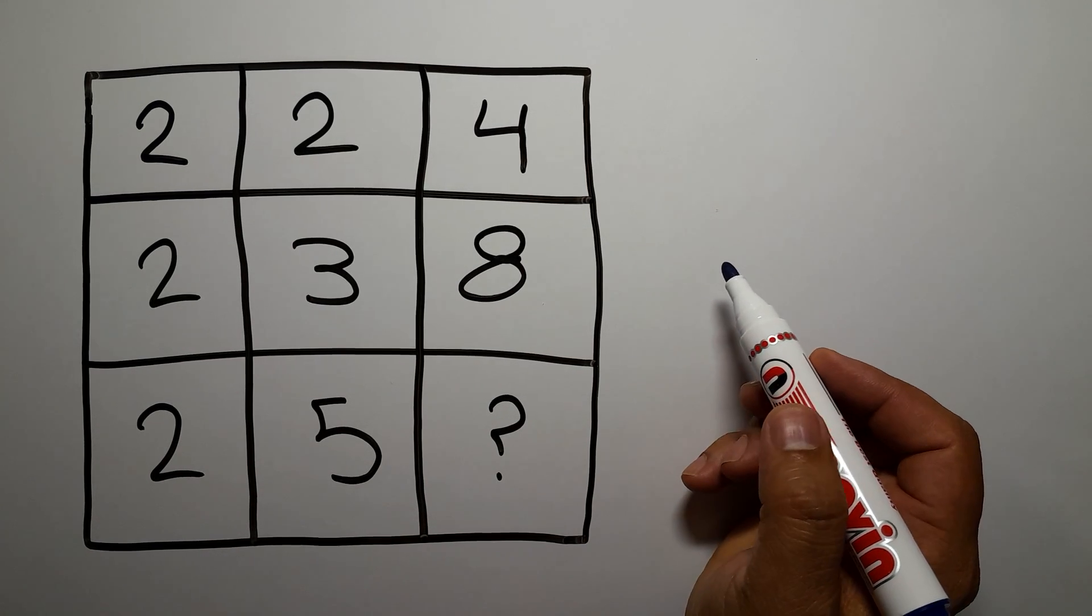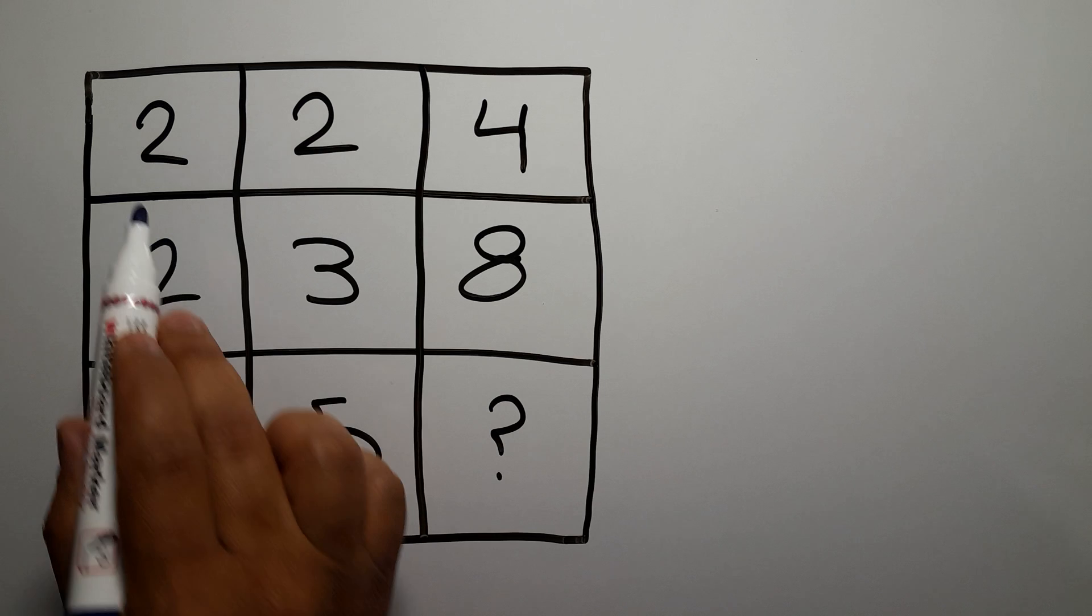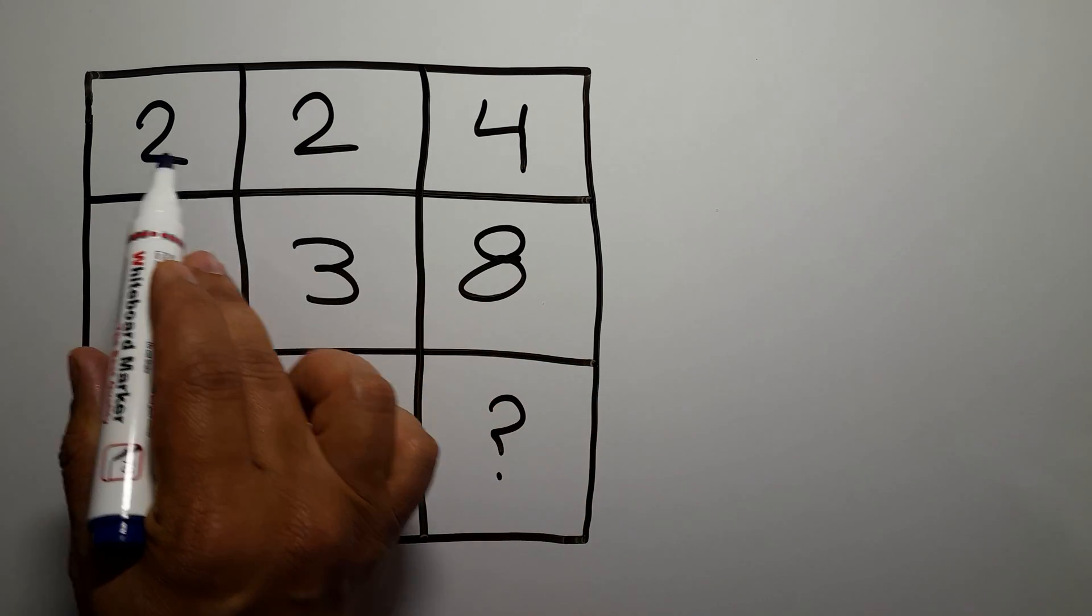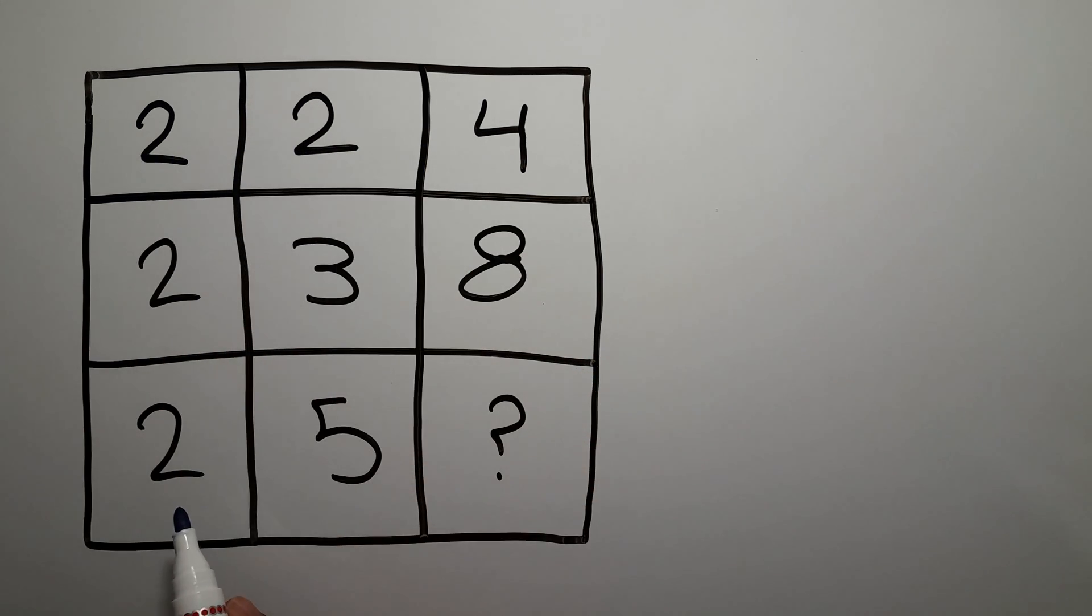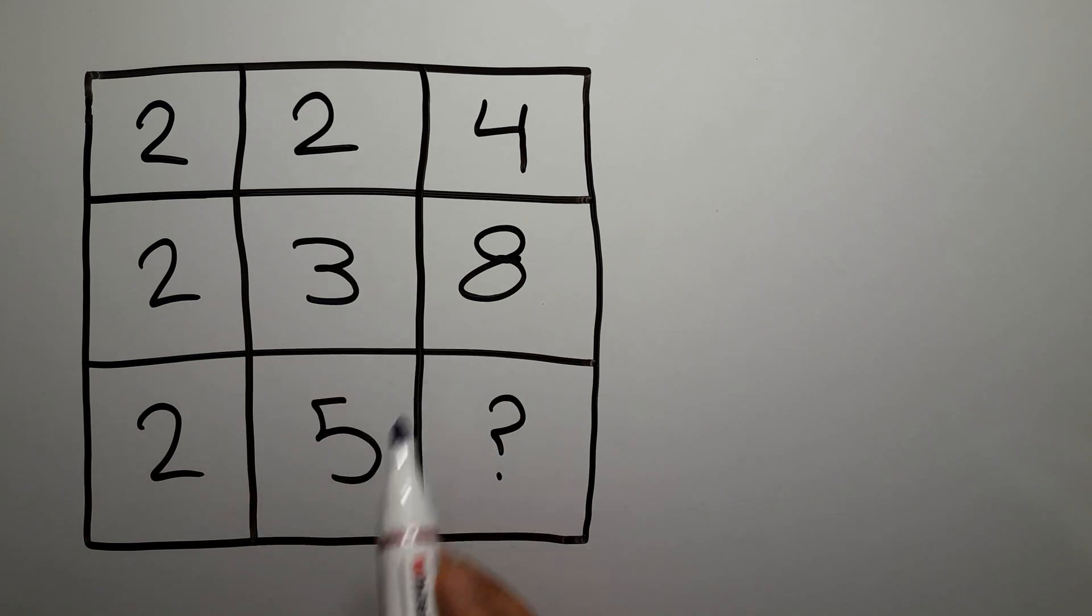Hey guys, welcome to Puzzle Joy. In this video we have a 3 by 3 matrix. The first row has numbers 2, 2, and 4. The second row has numbers 2, 3, and 8. In the third row we have 2, 5, and question mark. Our goal is to find the pattern that exists here and calculate the missing number.